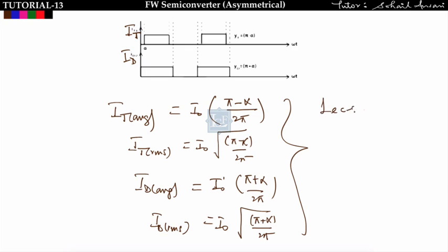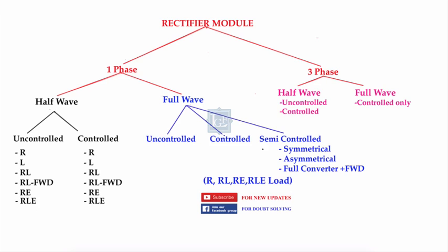How to derive these values has already been discussed in lecture number 8 on the classification of rectifiers, where in the last 10 minutes I explained how to find the RMS value and average value of any rectangular pulse. Please go through that lecture to understand how IT average, IT rms, ID average, and ID rms are obtained. In the next lecture we will cover the single-phase full-wave semi-controlled converter with a freewheeling diode, that is lecture number 13c.